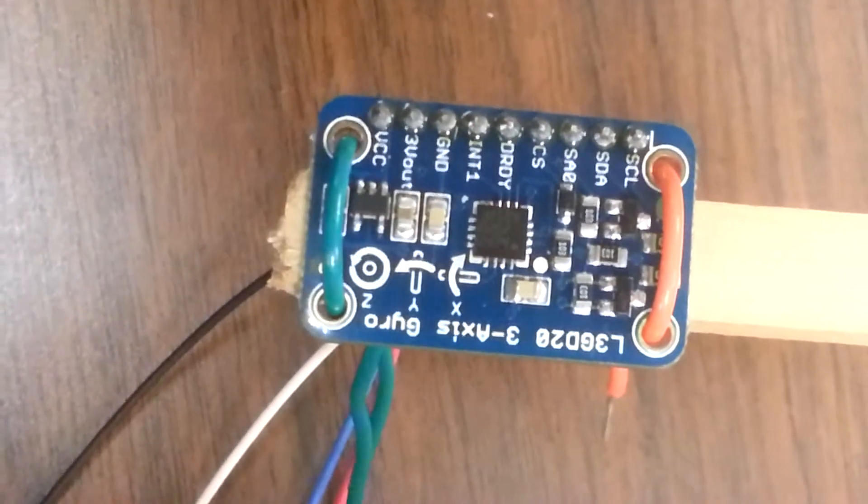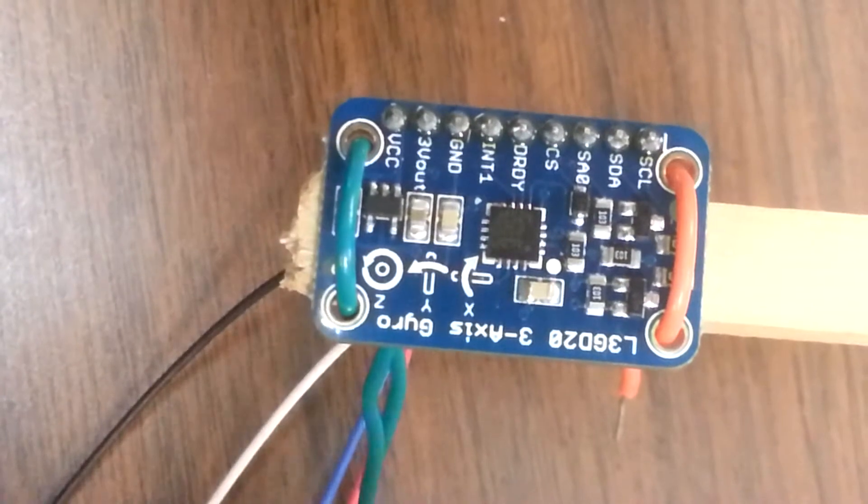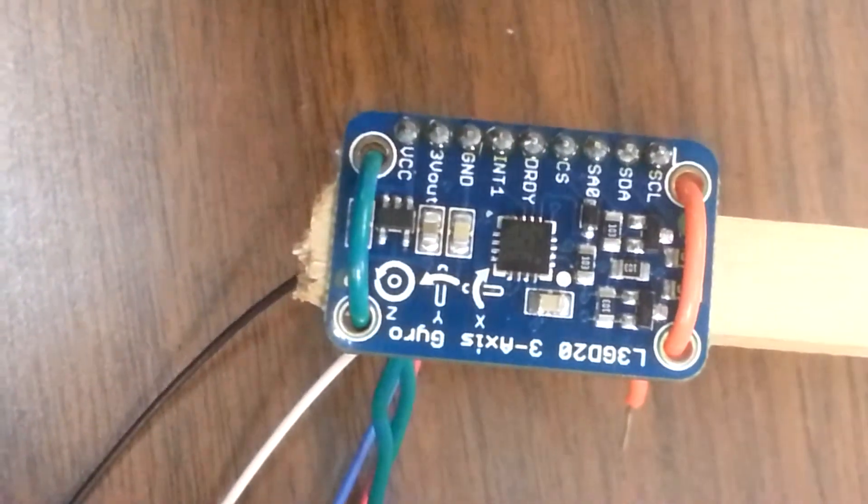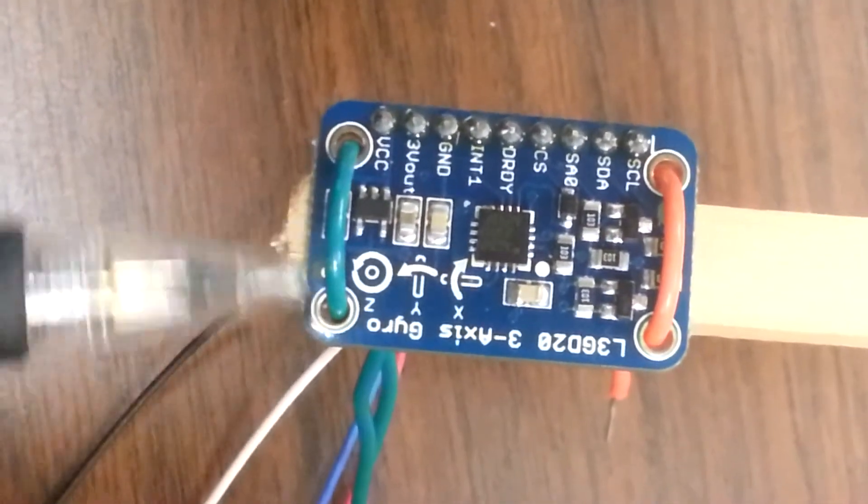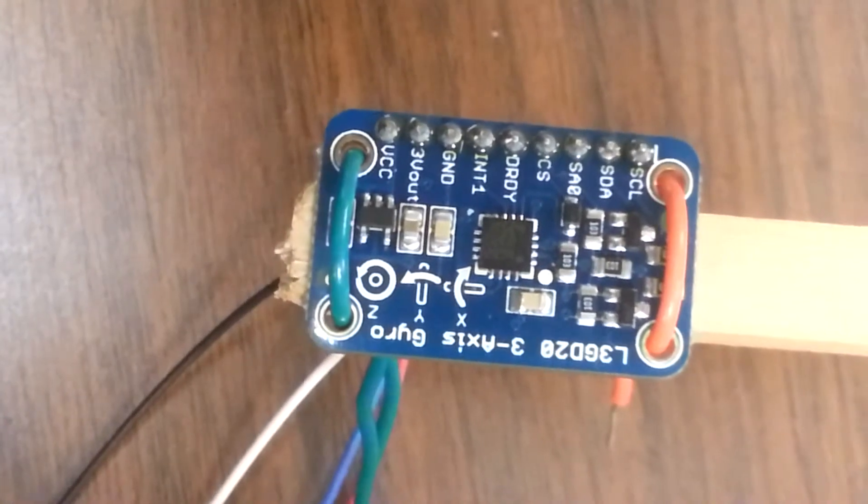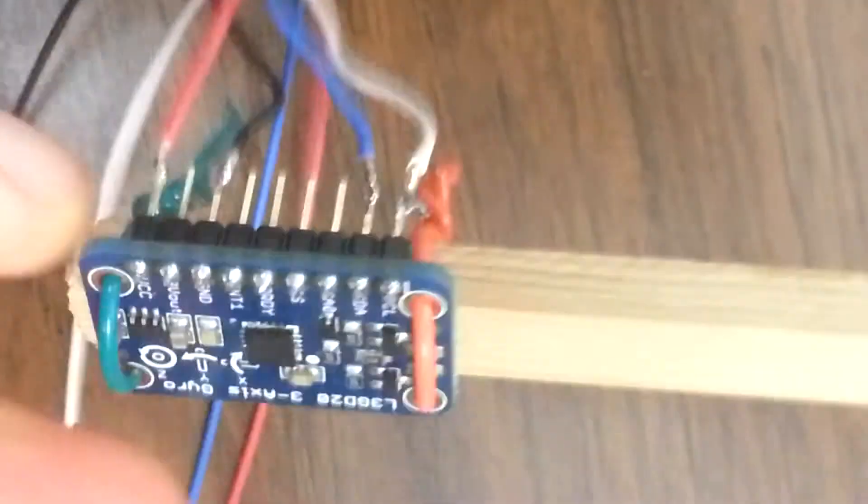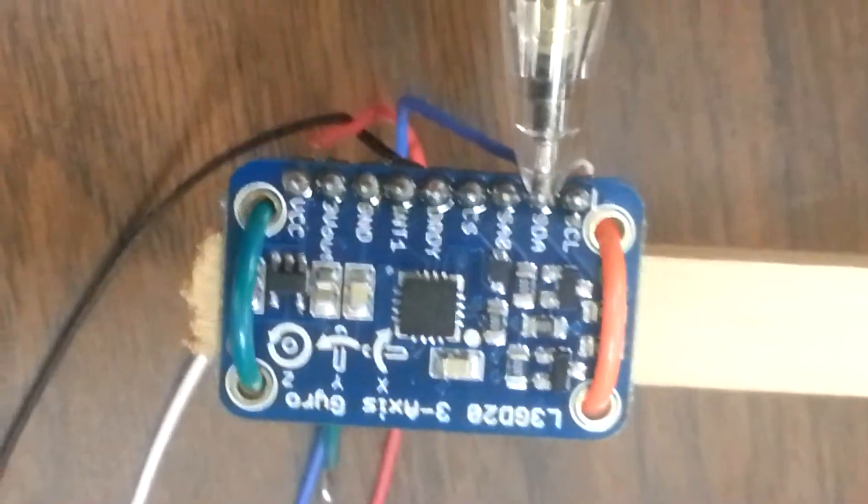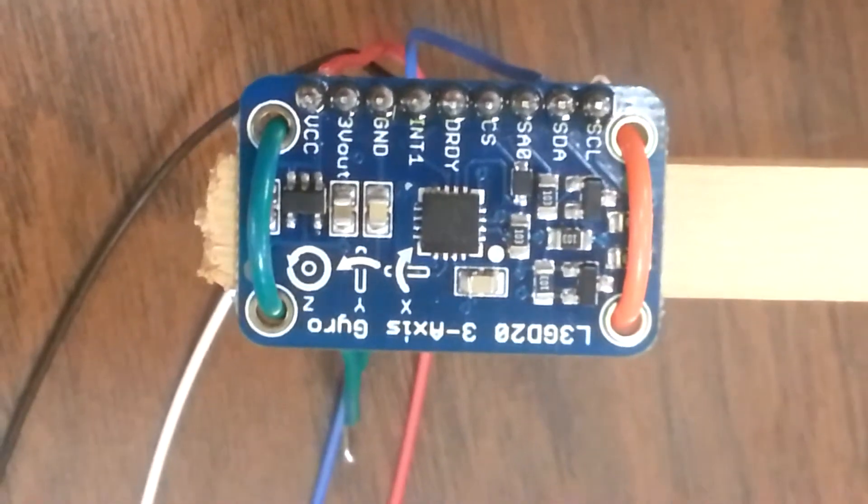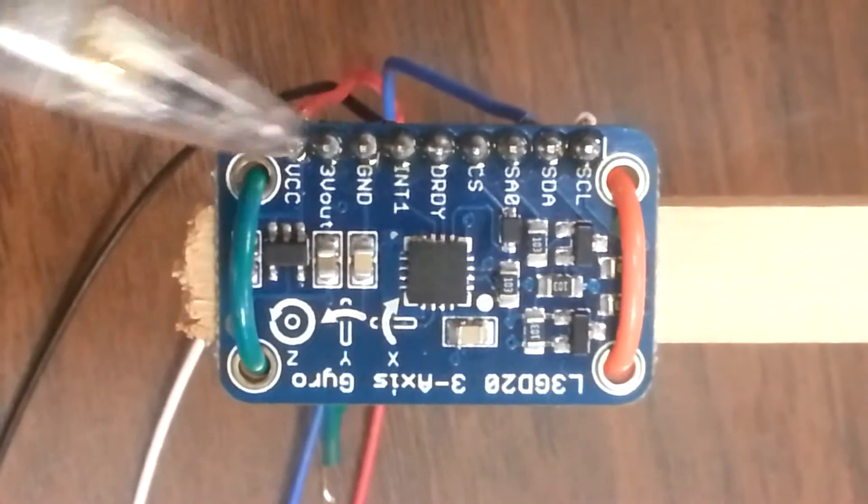Here is our gyro that we'll be using to sense the rotational inputs from the inverted pendulum cart. We'll be using the L3-GD20 3-axis gyro from Adafruit. We have it mounted here with these wires, this green and orange wire. And then we soldered the pins here on this side. Onto these wires, these leads are soldered directly onto the pins to ensure we have a good connection. These two pins at the end we'll be using for the I2C communication to the Arduino. And then we'll be using VCC to power the board and then ground to ground it.